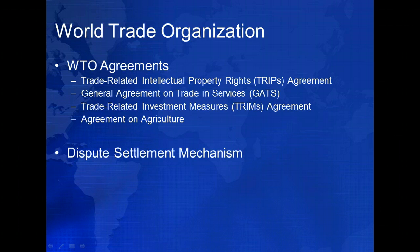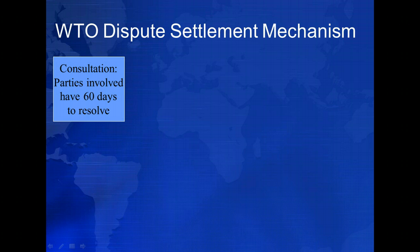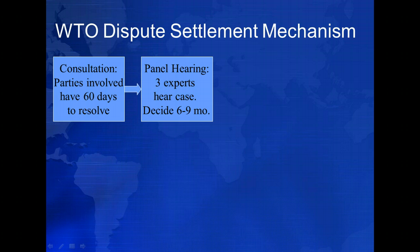The WTO also includes a dispute settlement mechanism, which provides a forum through which states can bring and receive the settlement of disputes without resorting to the kind of destructive trade wars and downward spirals that sparked the Great Depression. Disputes brought to the WTO are initiated at the request of member states. Once a dispute is filed, consultation begins, and parties have 60 days to attempt to reach a resolution. If they are unable to do so, a panel hearing is convened, consisting of three trade experts selected by the WTO secretariat for their expertise.